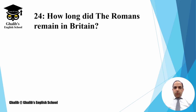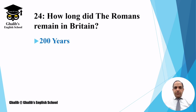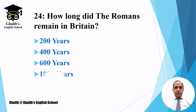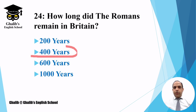Question number twenty-four: how long did the Romans remain in Britain? The options are 200 years, 400 years, 600 years, or 1,000 years. The Romans stayed in Great Britain for 400 years. During that time they changed the structure of law, public buildings, and introduced some plants and animals as well.